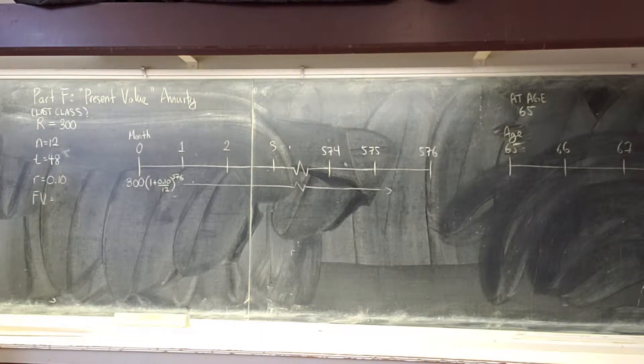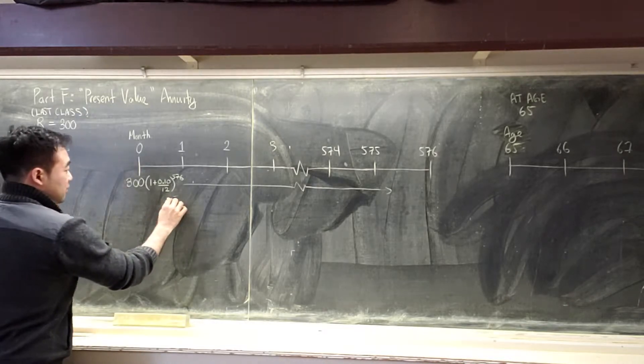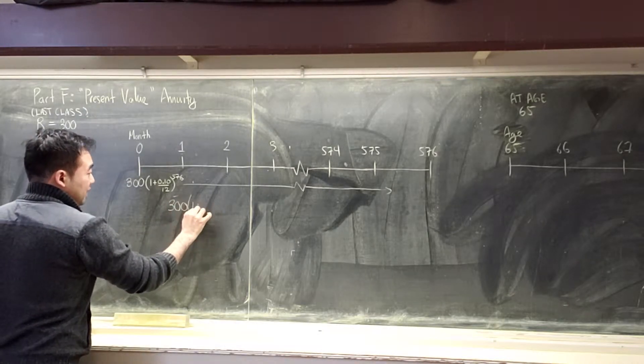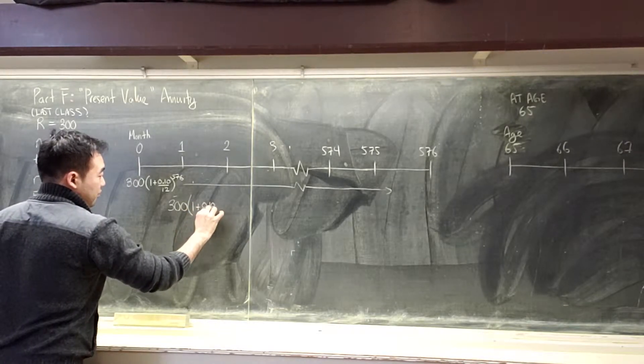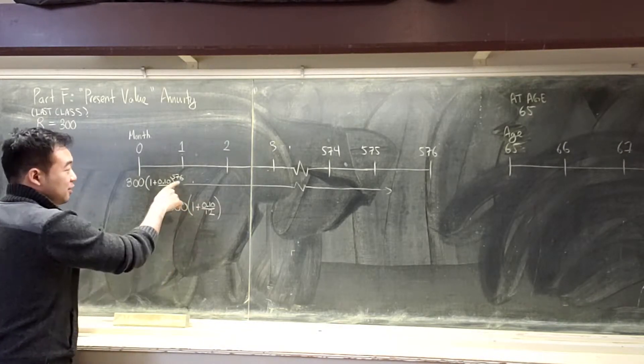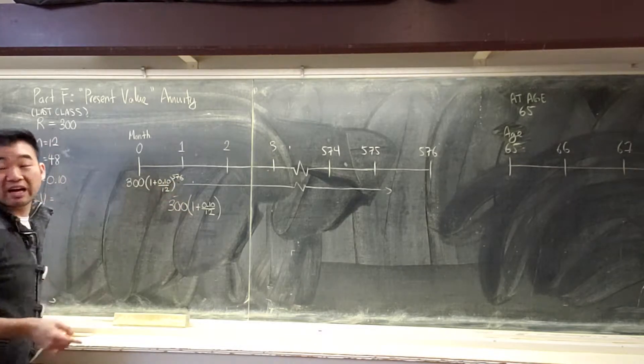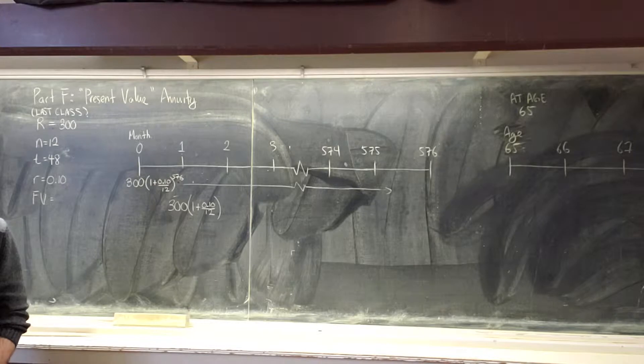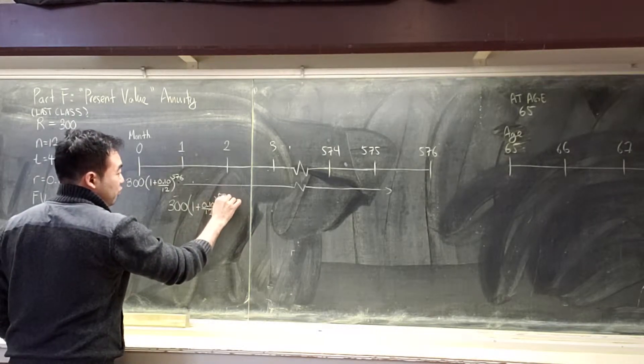And then, the month after that, you put in another $300. At which point, I should get the same interest rate every month. But, because I've waited a month, it's not 576 months. It's 575 months. It's one month less than before.